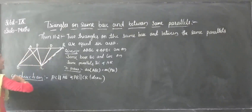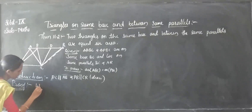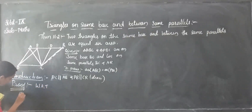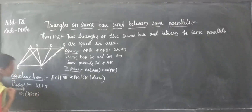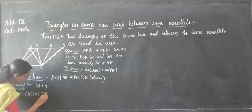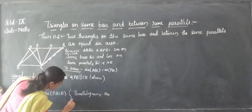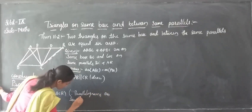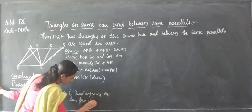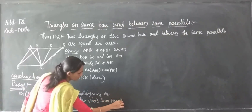Area of ABCD is equal to area of PBCR — yes or no? Because these are parallelograms on the same base BC and between the same parallels BC and AR.